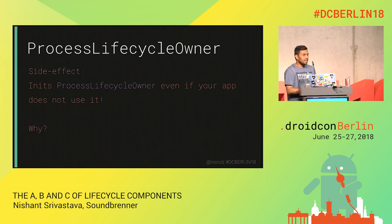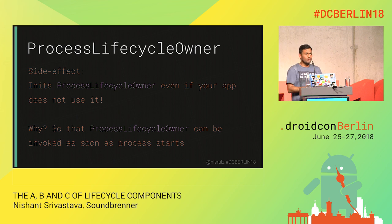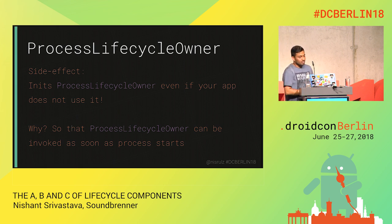Why would someone do that? The idea was that it should initialize itself as soon as the app starts so it can track multiple activities starting one after another. A content provider gets initialized as soon as the app starts because you define it in your manifest file. But this is a side effect you get if you use the extension library dependency.